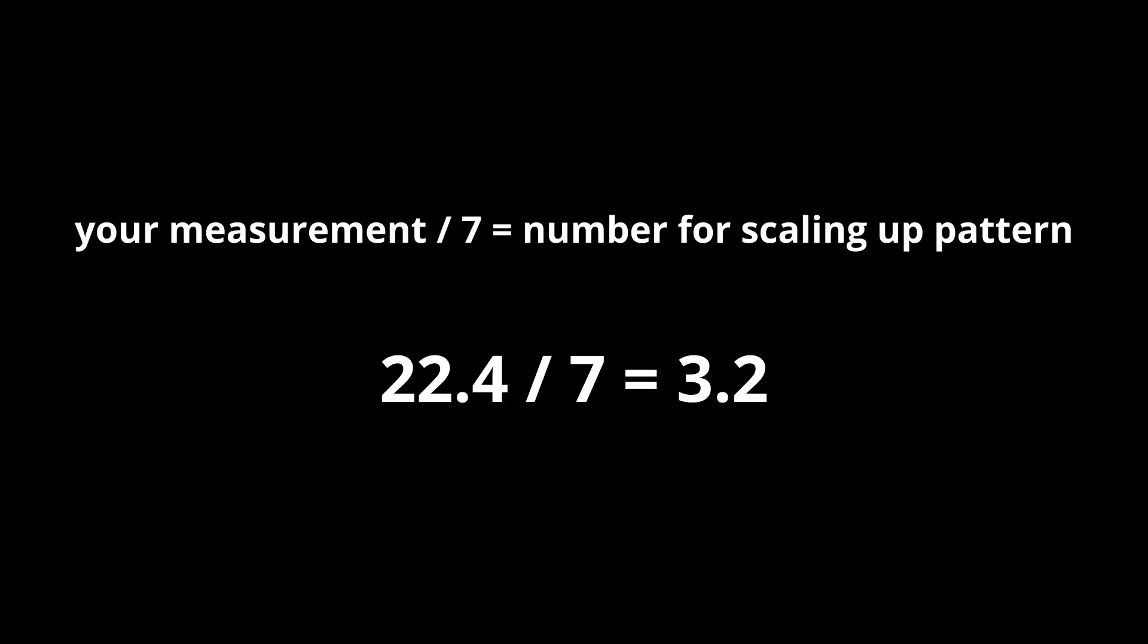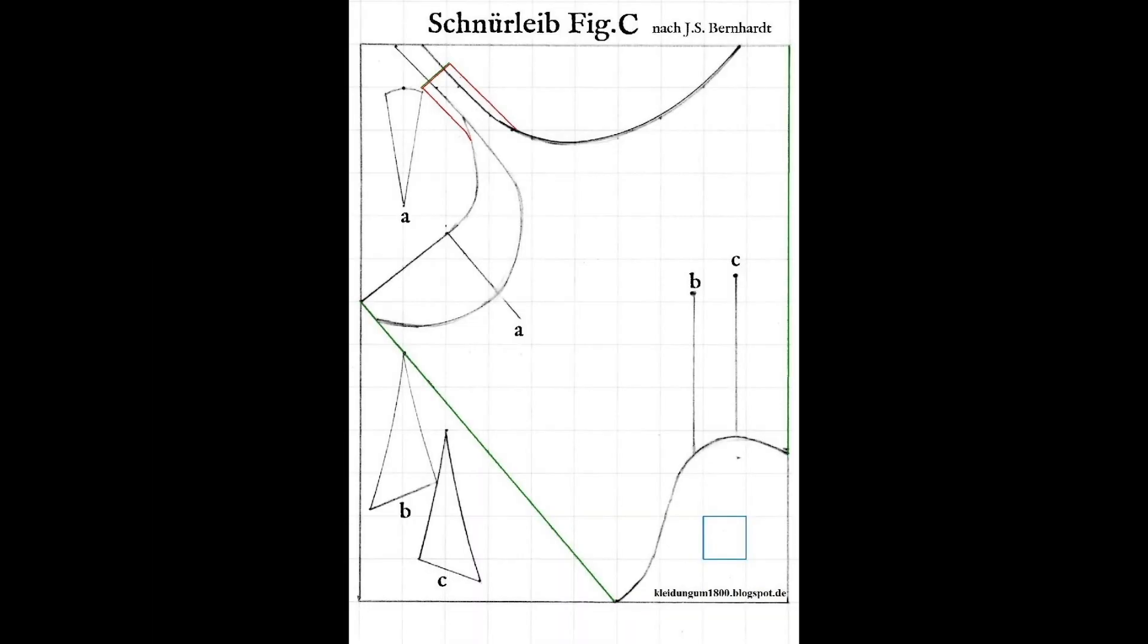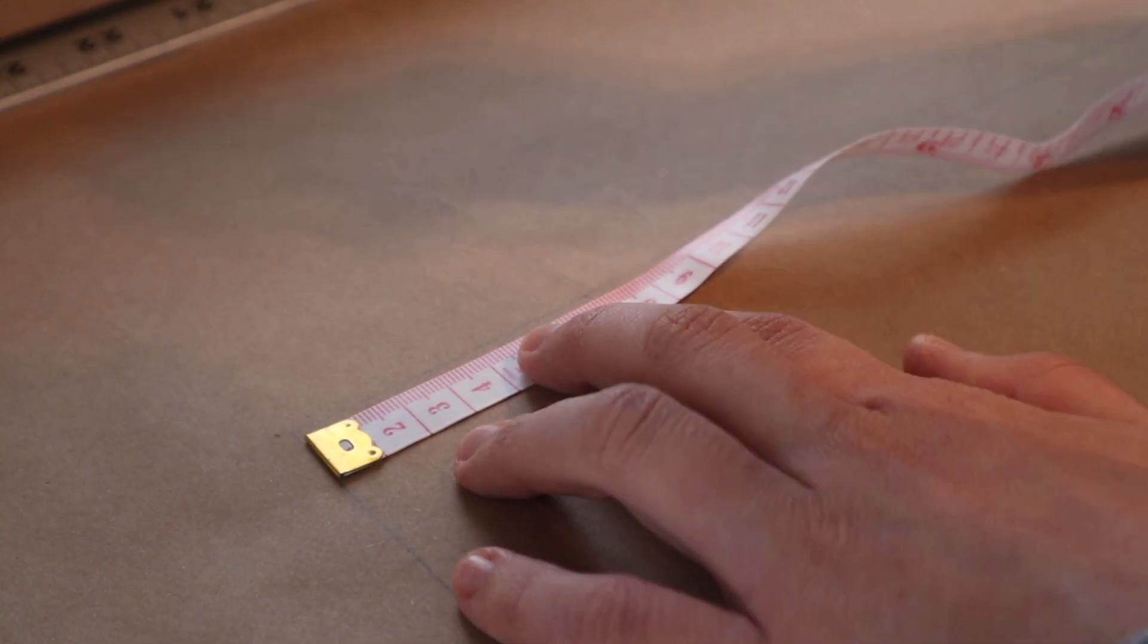In my case, the measurement is 22.4 centimeters. Bernhardt says to divide this number by 7, which gives me 3.2. With this number, I can now scale up the pattern so that each square is equal to 3.2 centimeters. Since I have no Photoshop skills or a projector, I chose to create a grid on paper by hand.